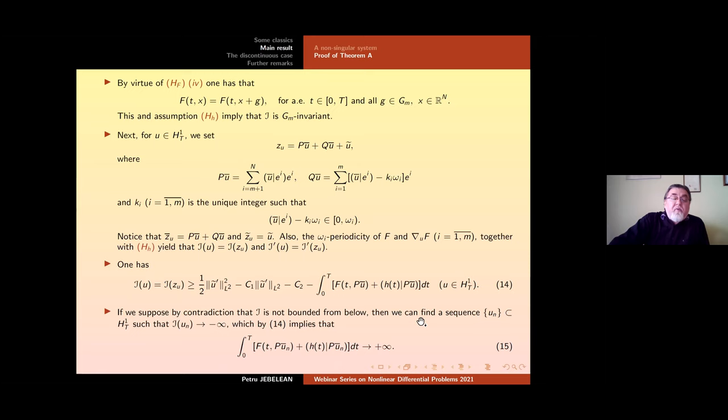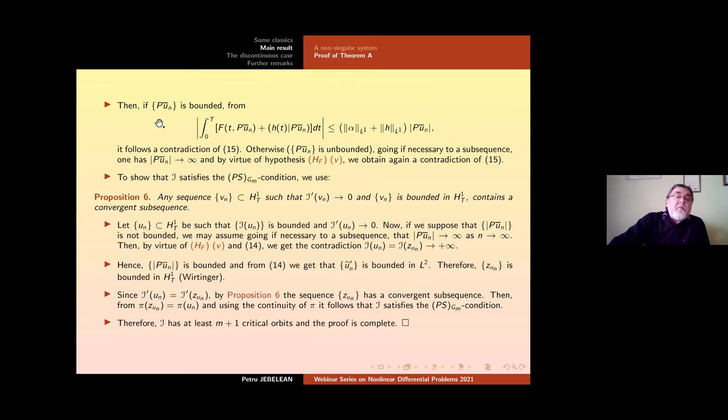First we argue for the boundedness of I. Clearly this is bounded from below if we suppose by contradiction that I is not bounded from below then this must be plus infinite here and we have to distinguish between the cases. P(u_n_bar) is bounded, it is immediate the contradiction here meaning that this is bounded. Otherwise if P(u_n_bar) is not bounded, if u_n_bar is not bounded then we invoke the hypothesis HF5 and again we obtain a contradiction.